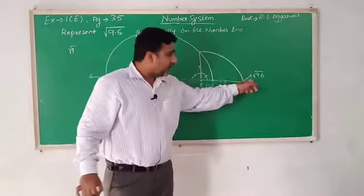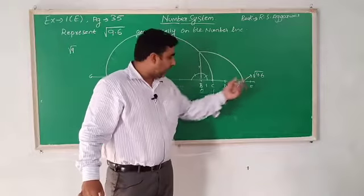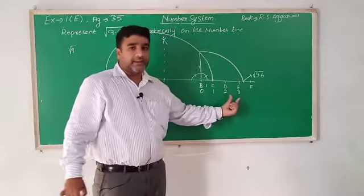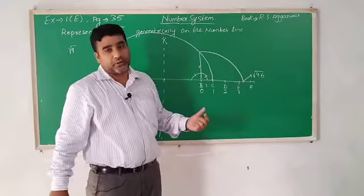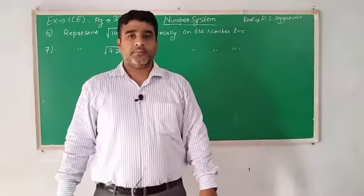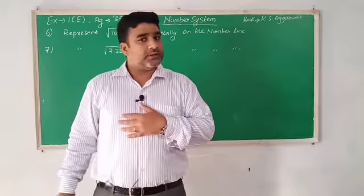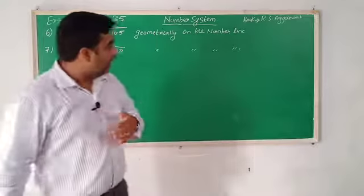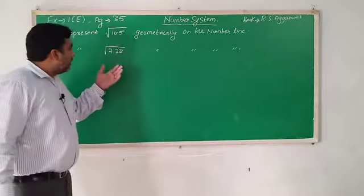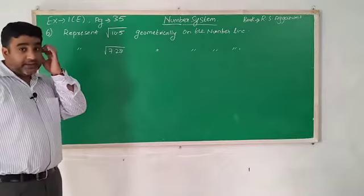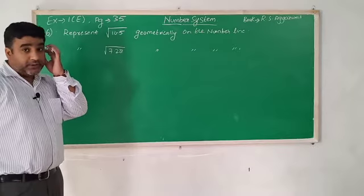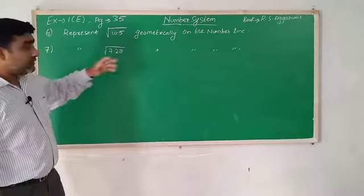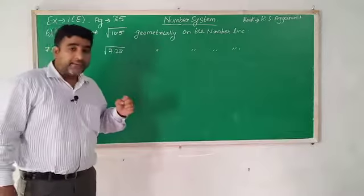You have to represent it on the number line. This is very important. Representing it and writing the numbering below B, C, D, E is also very important. This is a very important concept — to represent irrational numbers on the number line — and it is also very important from the examination point of view.